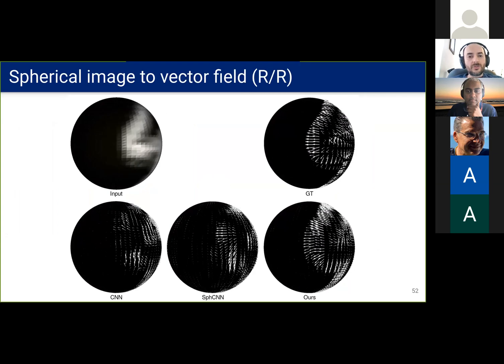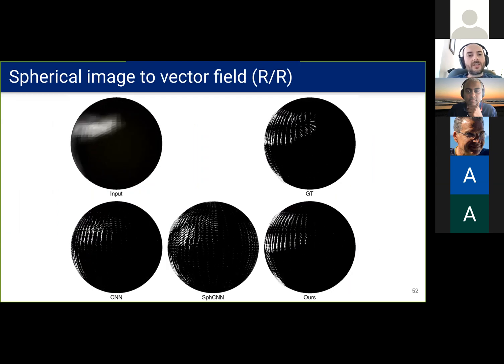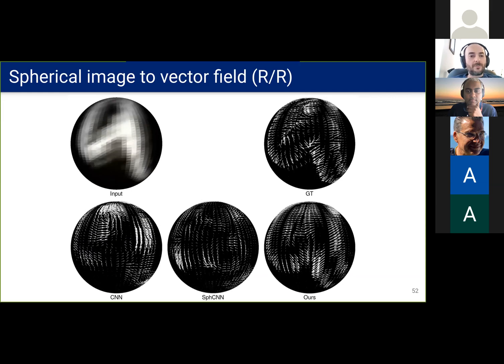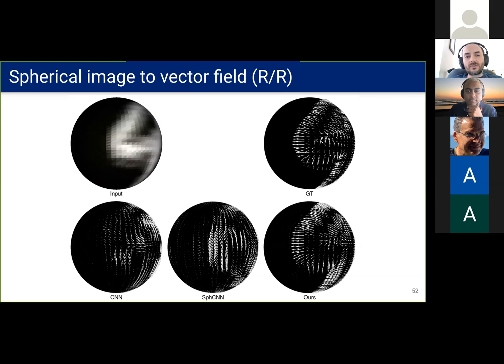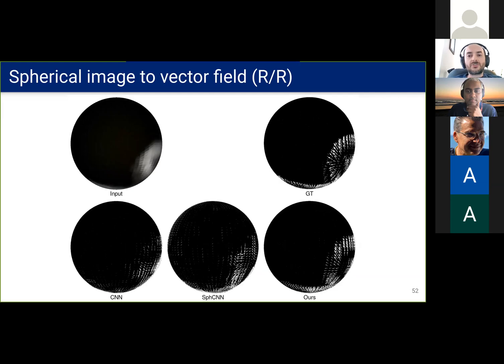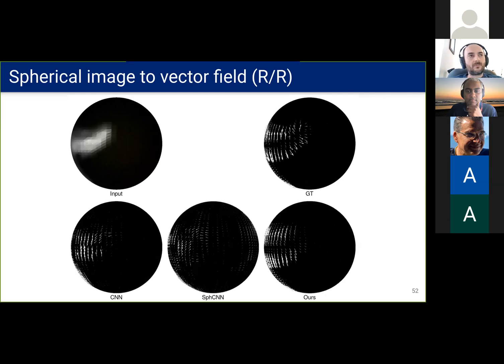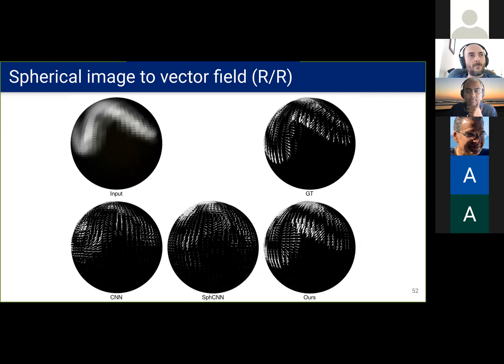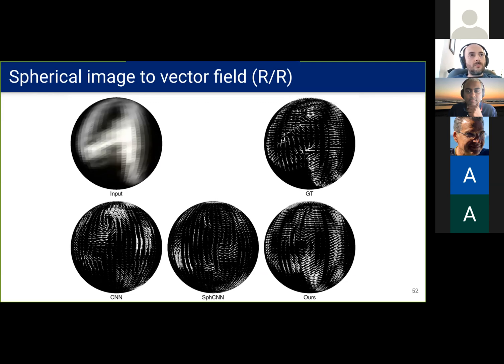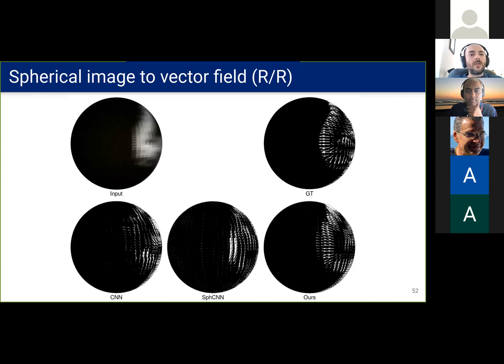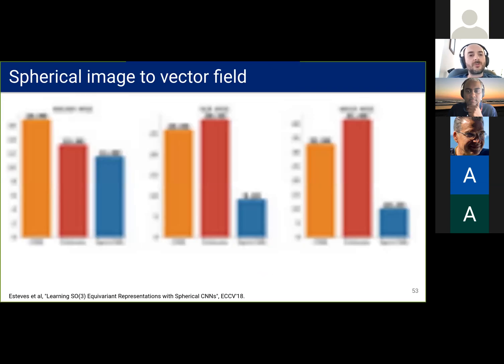We can also predict a vector field from a spherical image. We add an angular offset based on the category. Note how the other methods cannot predict the vectors' orientations consistently. And here are the numbers. Again, our performance is much better.